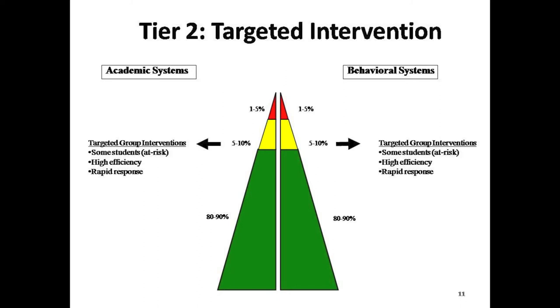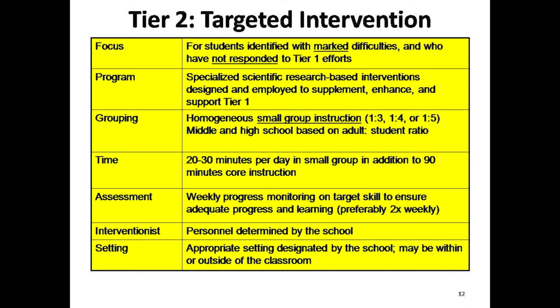Tier 2 targeted intervention includes matching student needs with effective interventions. Some students typically continue to struggle academically and/or behaviorally even after receiving Tier 1 interventions. Their learning rate falls below the preset cutoff score on universal benchmark data, and data generated by the teacher demonstrates low academic achievement. For these students, the next step is to provide them with Tier 2 support. This population includes about 20% of at-risk students. Students in Tier 2 receive extra help in or outside of the classroom to ensure progress, which may be provided in small groups on a regular basis. Students continue to receive quality instruction aligned with the Texas Essential Knowledge and Skills and positive behavioral supports, as well as regular progress monitoring. It is expected that 10-15% of students will be successful with Tier 2 assistance.